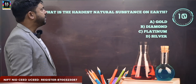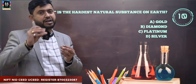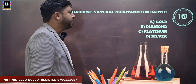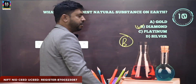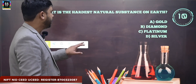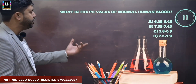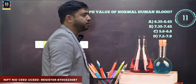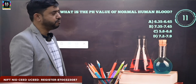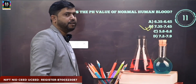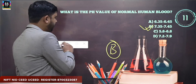What is the hardest natural substance on Earth? The options are gold, diamond, platinum, and silver. The correct answer is diamond — diamond is the hardest natural substance. The next question is: what is the pH value of normal human blood? The correct answer is 7.35 to 7.45 — that is the normal pH value of human blood.